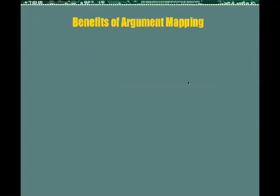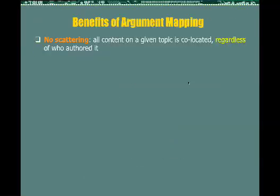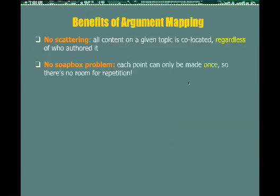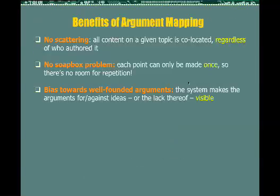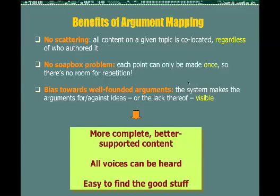So what are the benefits of using argument mapping in this way? First of all, there is no scattering — all the content on a given topic is co-located, regardless of who authored it. There is no soap-box problem because each point can only appear in the argument map once, so there's no room for repetition. Small voices can be heard. And there is a bias towards well-founded arguments; the system makes the presence or absence of arguments for or against ideas quite visible. The result is more complete, better-supported argument, all voices can be heard, and it's easy to find the good stuff.